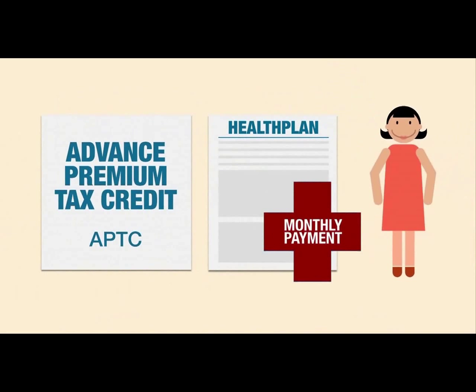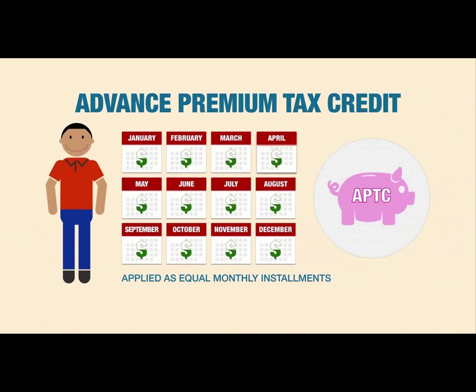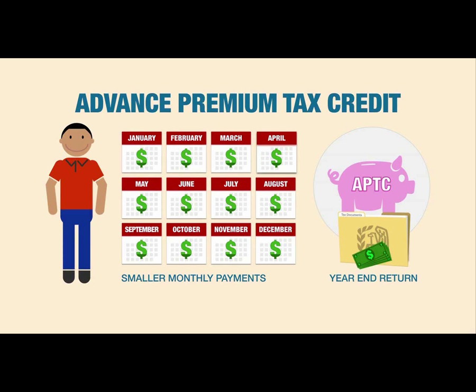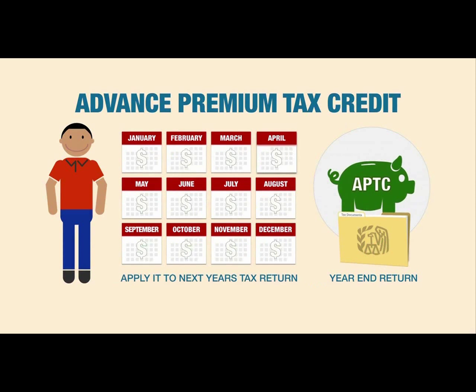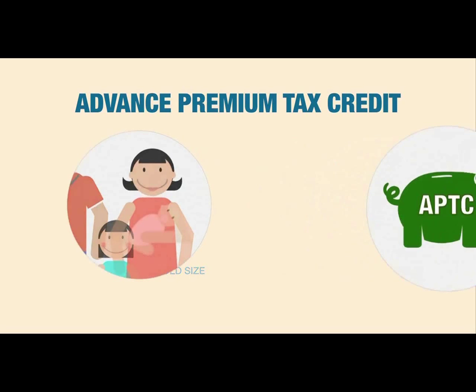With APTC, part of your monthly payment is made by the federal government directly to the health plan in which you've enrolled. If you qualify, there are three ways to apply your Advanced Premium Tax Credit: spread it equally across the year, use some of it each month (which increases what you pay monthly but may result in a refund), or don't use any during the year and get it refunded on your tax return. Your eligibility and amount depend on household size and income. Life changes like having a baby, getting married, or changing jobs can affect the amount.